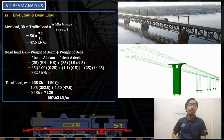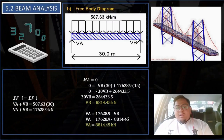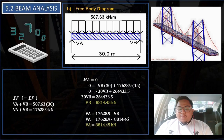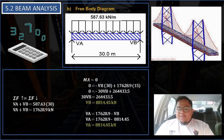Beam analysis — live load and dead load. Live load QK means traffic load multiplied by bridge width that gives 47.5 kN per meter. Dead load GK from bridge beam and bridge deck gives 382.5 kN per meter. Total load W uses the formula 1.35 GK plus 1.50 QK, giving 587.63 kN per meter. For the free body diagram, there is a uniformly distributed load of 587.63 kN per meter over 30 meters. Converting to a point load: 587.63 multiplied by 30 meters gives 17,628.9 kN. The reaction forces VB and VA are both 8,814.45 kN.